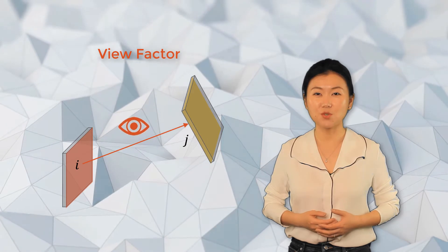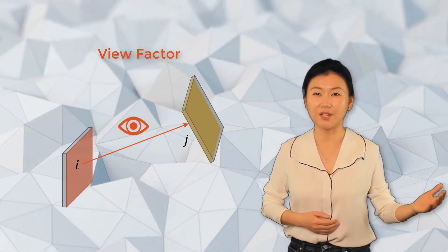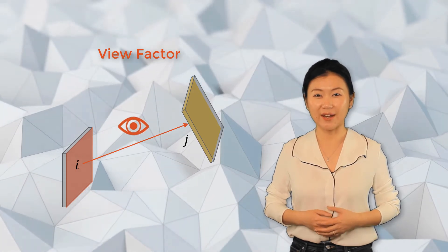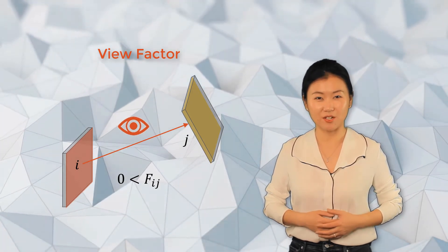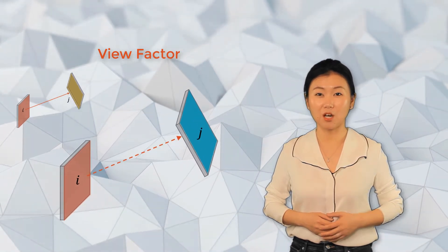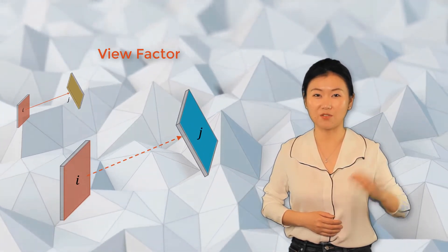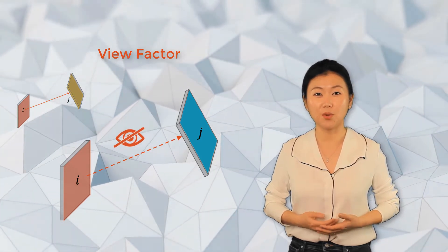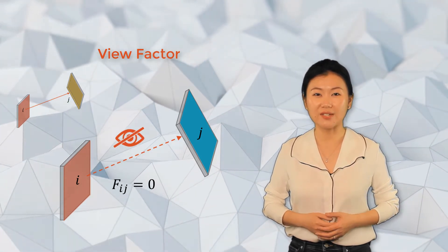There's nothing obstructing your view of surface j, which is marked as yellow. In this case, view factor Fij will be larger than zero. However, you will not be able to see any part of the opposite side of the yellow surface, indicated here in blue, so the view factor from the red surface to this blue surface is zero. In such cases, view factors can be readily verified by visual inspection.